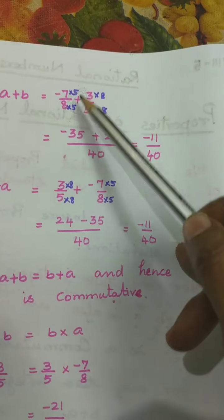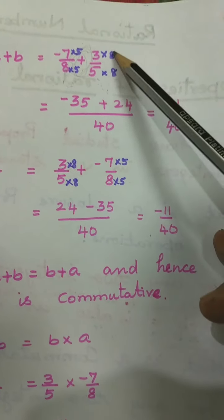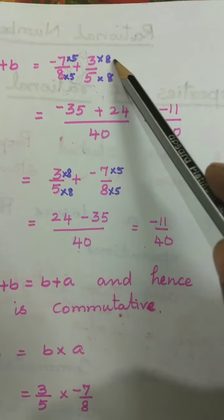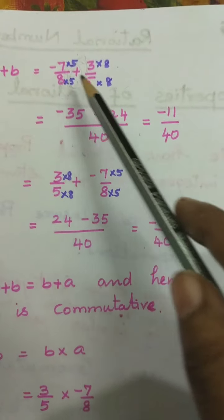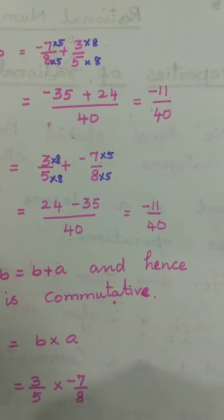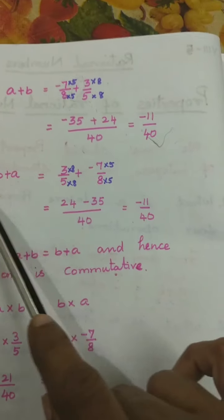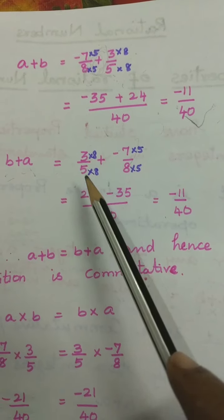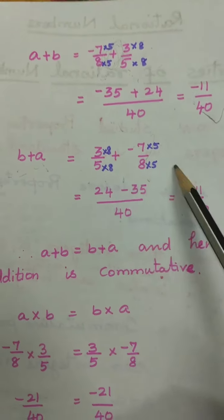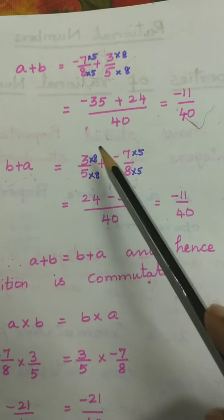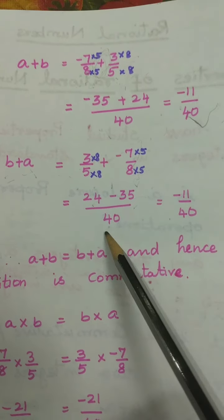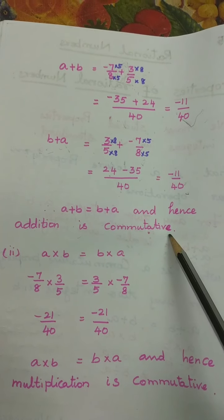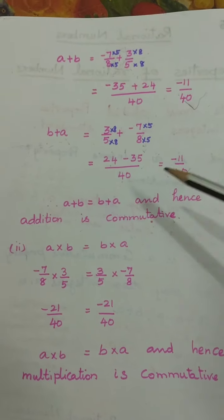The LCM of 8 and 5 is 40. We multiply minus 7 by 5, giving minus 35, and 3 by 8, giving 24, all over 40. So A plus B equals minus 11 by 40. Then for B plus A: 3 by 5 plus minus 7 by 8. Multiplying to get LCM 40 gives 24 minus 35 over 40, which also equals minus 11 by 40. So A plus B is equal to B plus A, and hence addition is commutative. Commutative property is true in addition, proved by example.